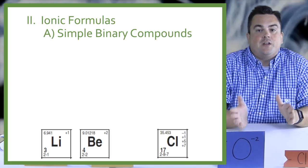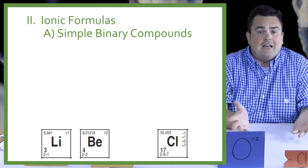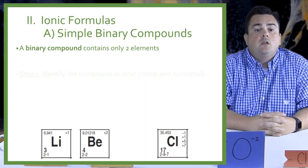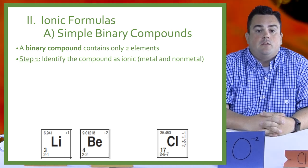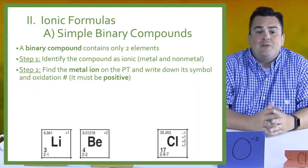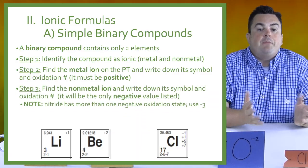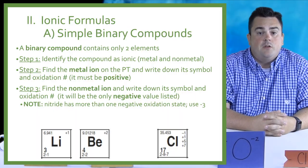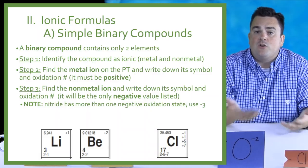So much like last lesson, we're going to start with the rules for ionic first. For ionic formulas — simple binary compounds — binary means that it contains only two elements. Step one: identify the compound as ionic — metal and nonmetal. Step two: find the metal ion on the periodic table and write down its symbol and oxidation number. It must be positive. Step three: find the nonmetal ion and write down its symbol and oxidation number. It will be the only negative value listed — it's always that top one.